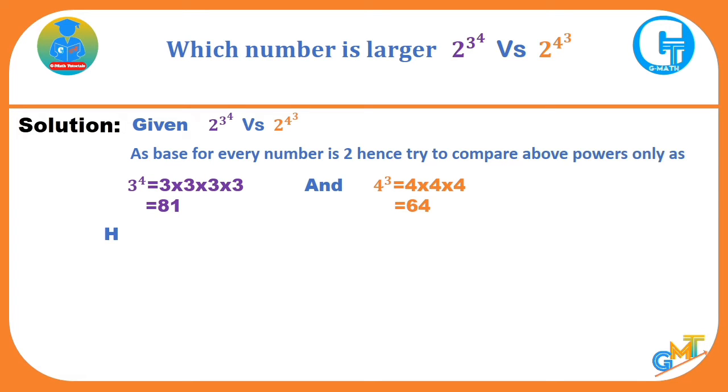Here, 81 is greater than 64, so we can write 3 raise to 4 is greater than 4 raise to 3.